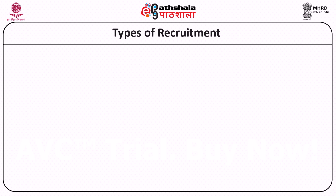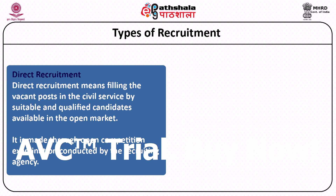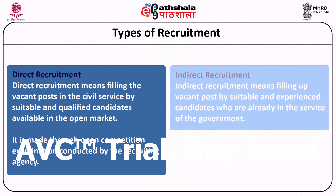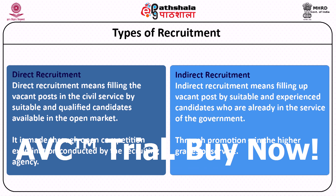Now we are going to discuss types of recruitment. The first is direct recruitment, carried out through examinations and interviews where candidates are chosen from the open market. This is an open system of recruitment where all eligible candidates are free to apply and given equal chance. The second type is indirect recruitment, also known as promotion, where candidates already working in an organization are given a chance to apply for vacant higher positions.